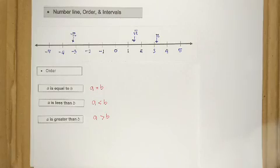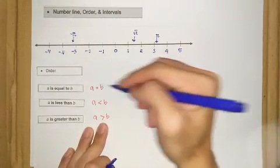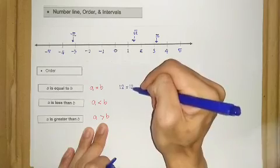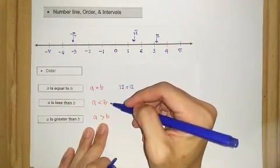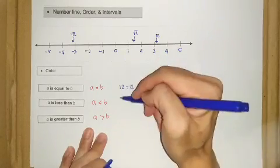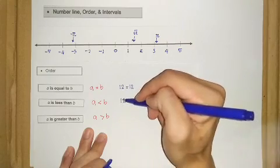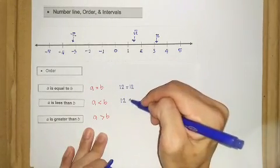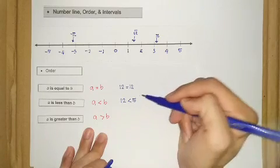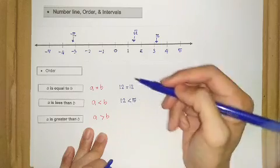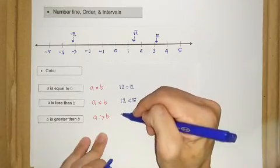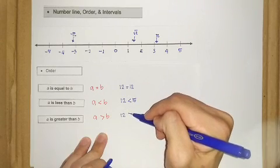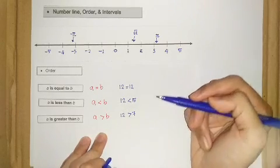So for example, for the first case, let's say A takes the value of 12. So what does it mean by A is equal to B? It means 12 is equal to 12 — we have the same number. For the second one, A is equal to 12, and A is less than B means 12 is less than 15, or any number greater than 12. And for the third one, A is still equal to 12 but A is greater than B, meaning 12 is greater than, let's say, 7. That's what we call the order.